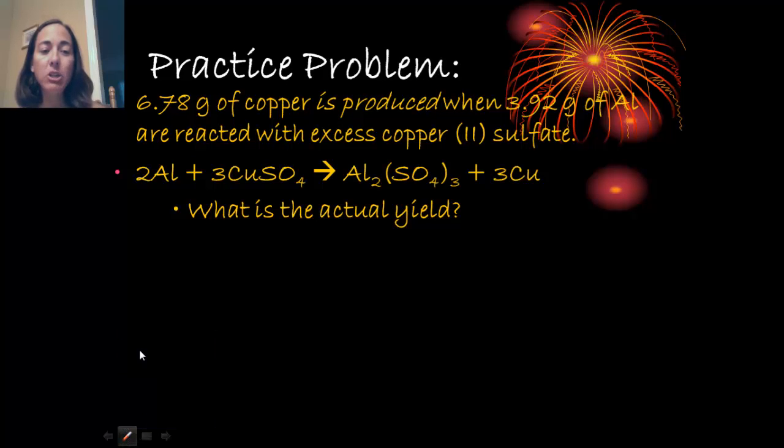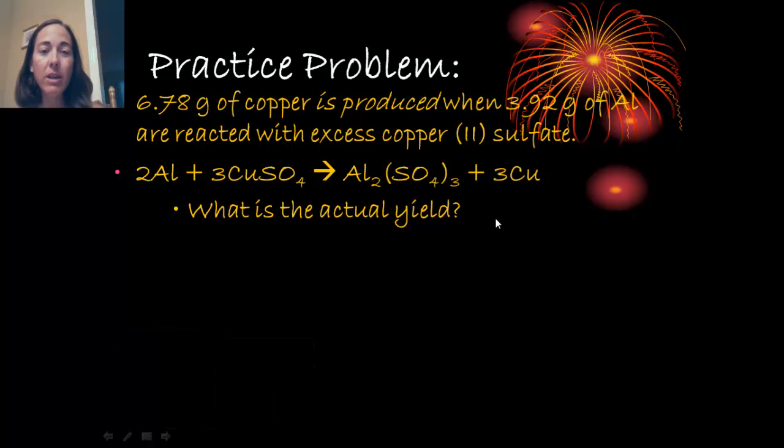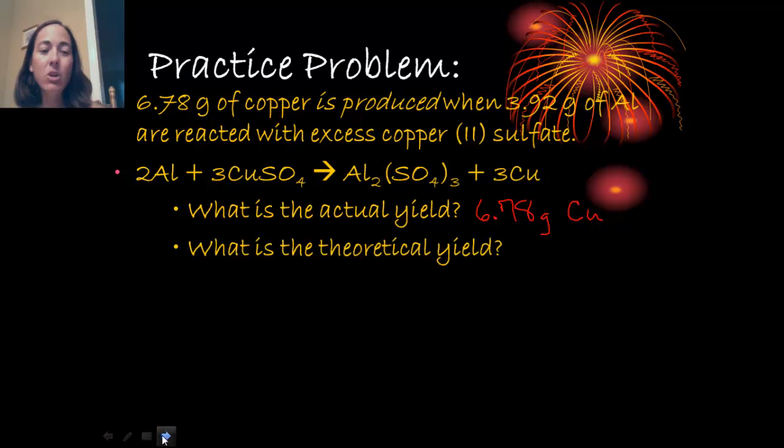Remember the definition of actual. Actual yield is the amount of product that is made during the experiment. What I want to do here in identifying it is just read out of context. The actual yield is going to be the copper that is produced. So when you read that question, it tells you 6.78 grams of copper is produced. So that's our actual yield. You want to look for words like produced, formed, during the lab, or in a reaction. Something that would indicate to you that it's really happening.